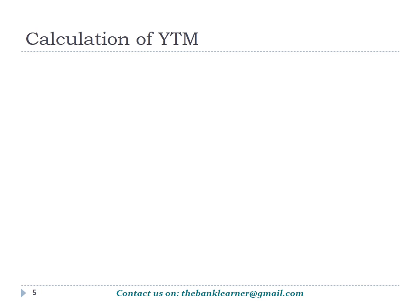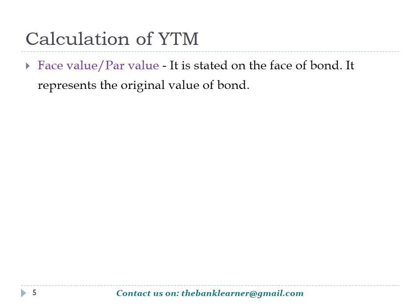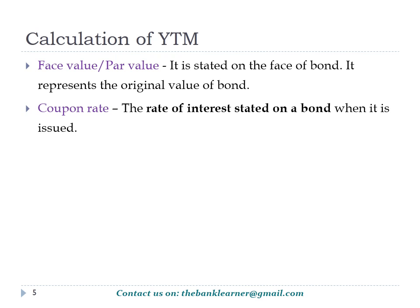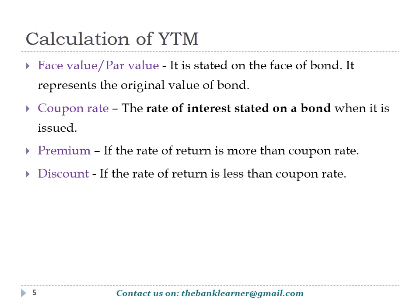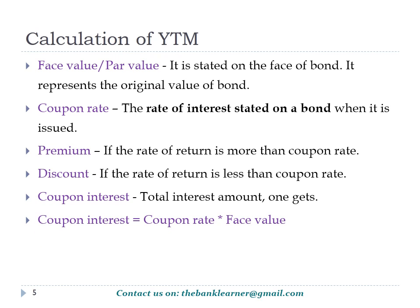Now let's look at various terms associated with bonds. Face value indicates the amount borrowed by the issuer which it promises to repay after a specified period. Coupon rate is the specific rate of interest assigned by the issuer for the borrowed money. Premium and discount refer to the differential rate with the coupon rate while selling the bond. Coupon interest is calculated by multiplying the coupon rate and face value.